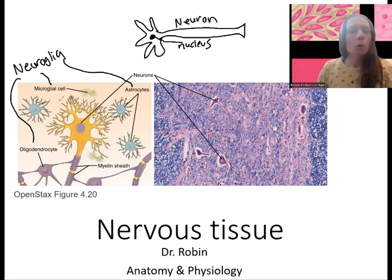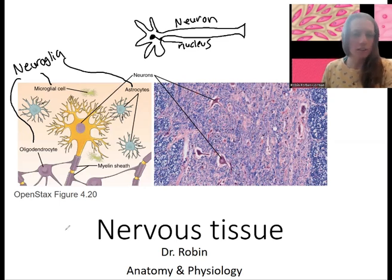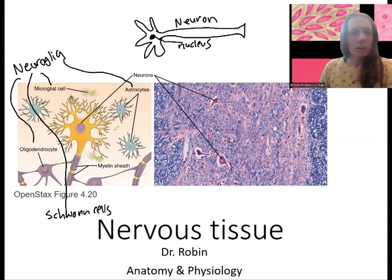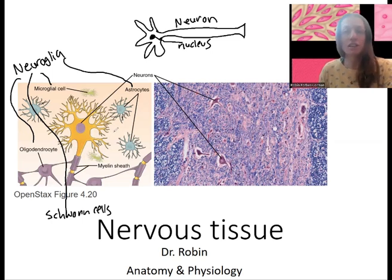We're going to go over these types of neuroglia. The type not listed here is Schwann cells — the fourth type of neuroglia. We'll talk more about them and go over each type and what it does when we get to the chapter on neurons. All five of these cell types make up the nervous tissue.